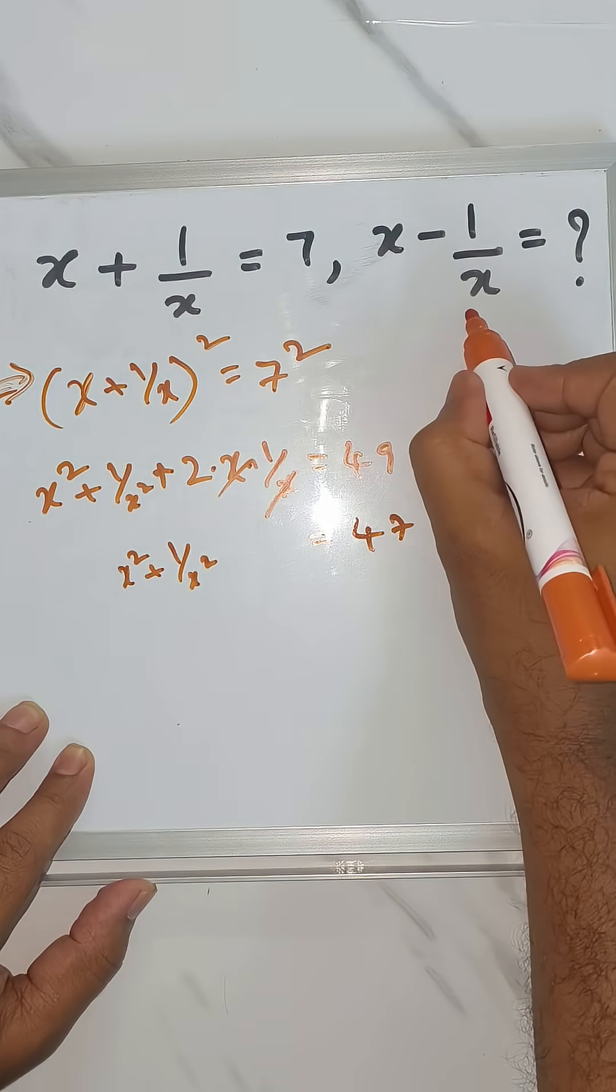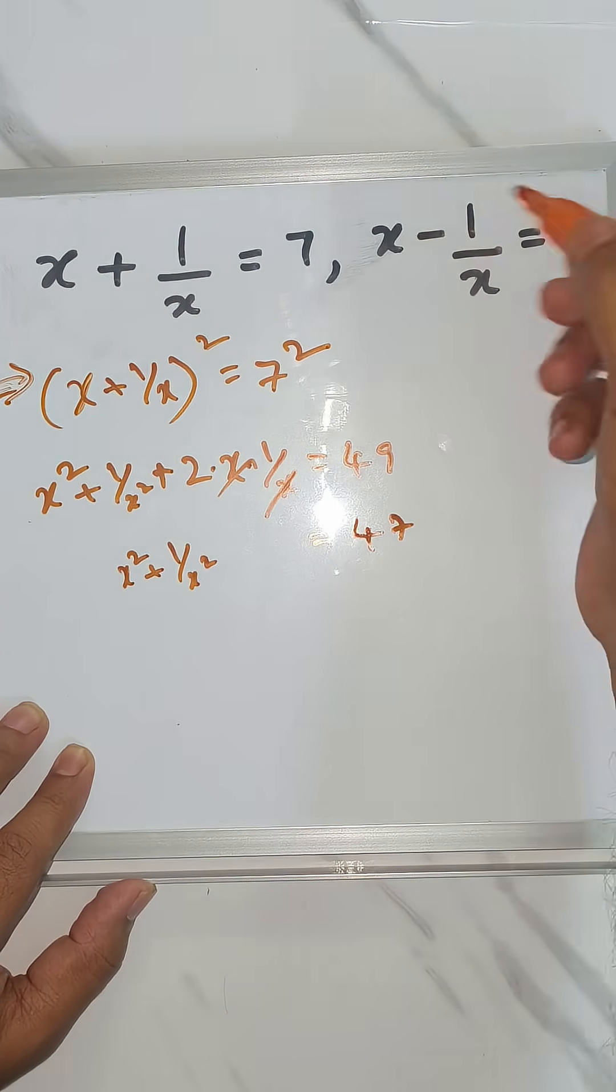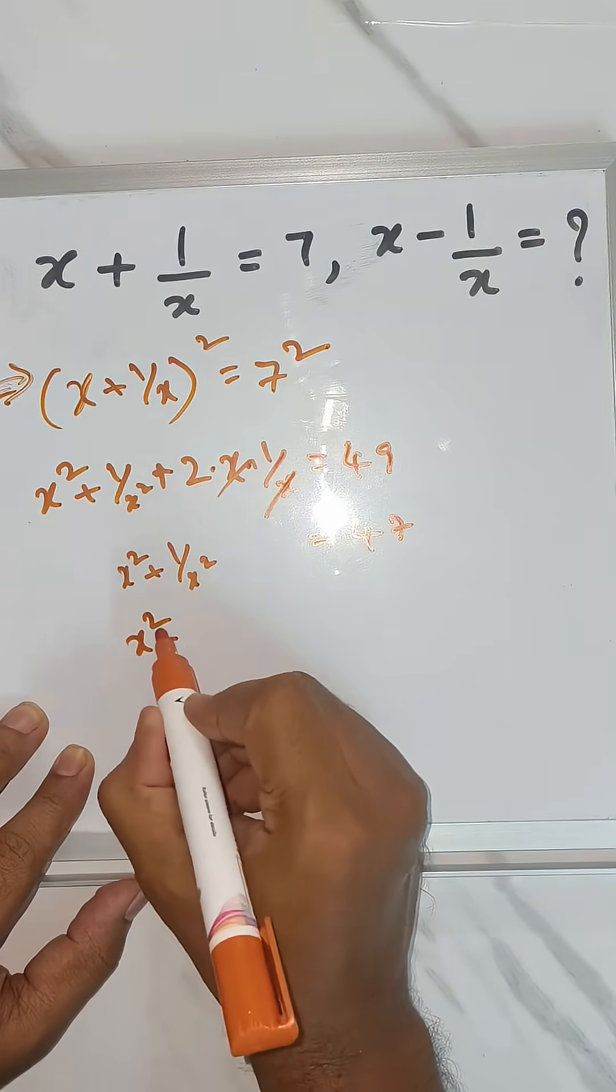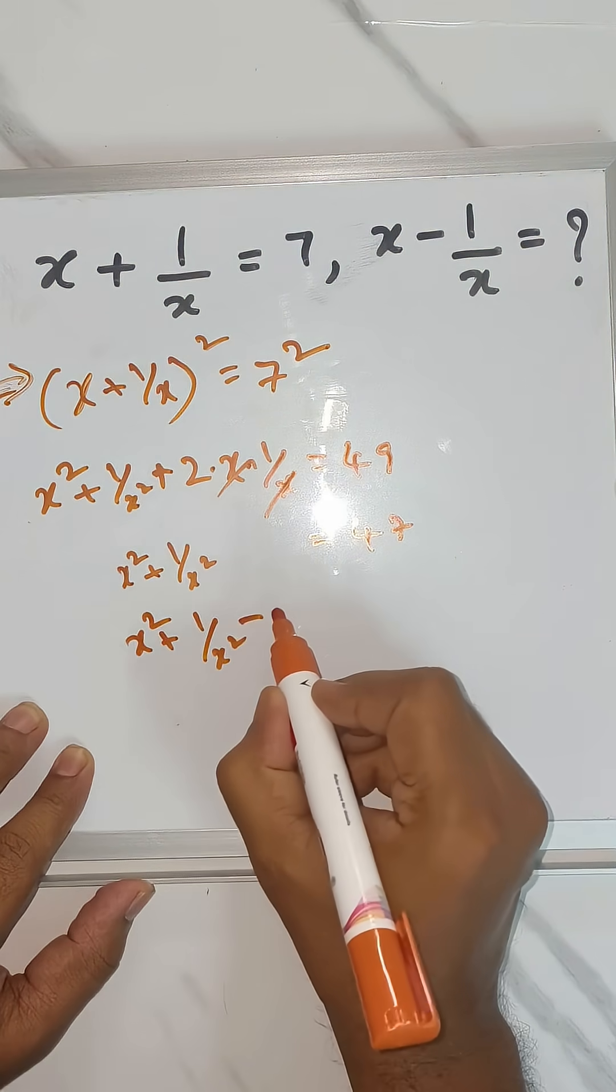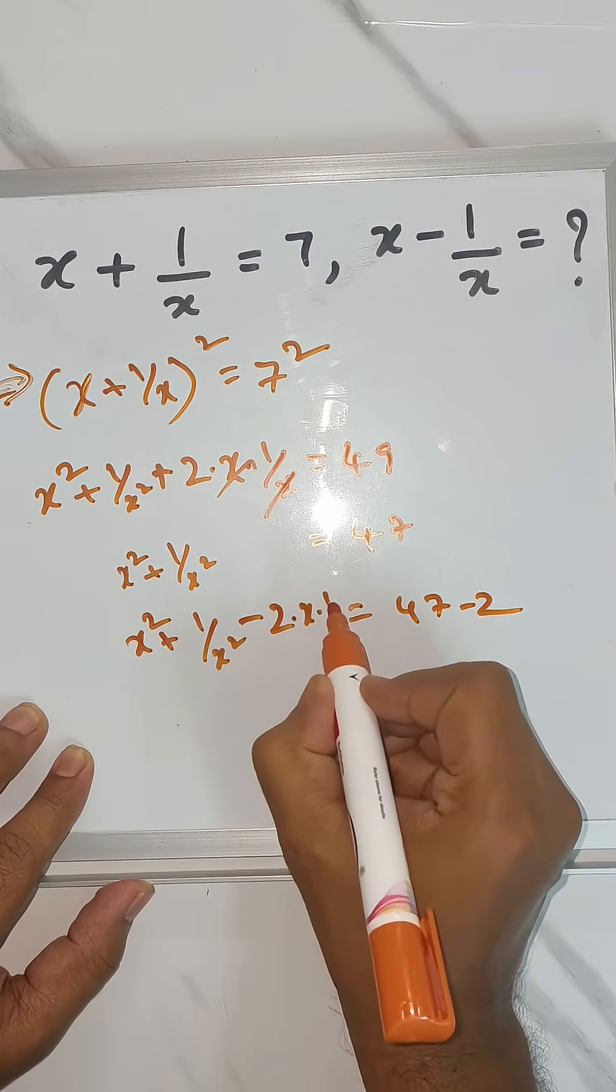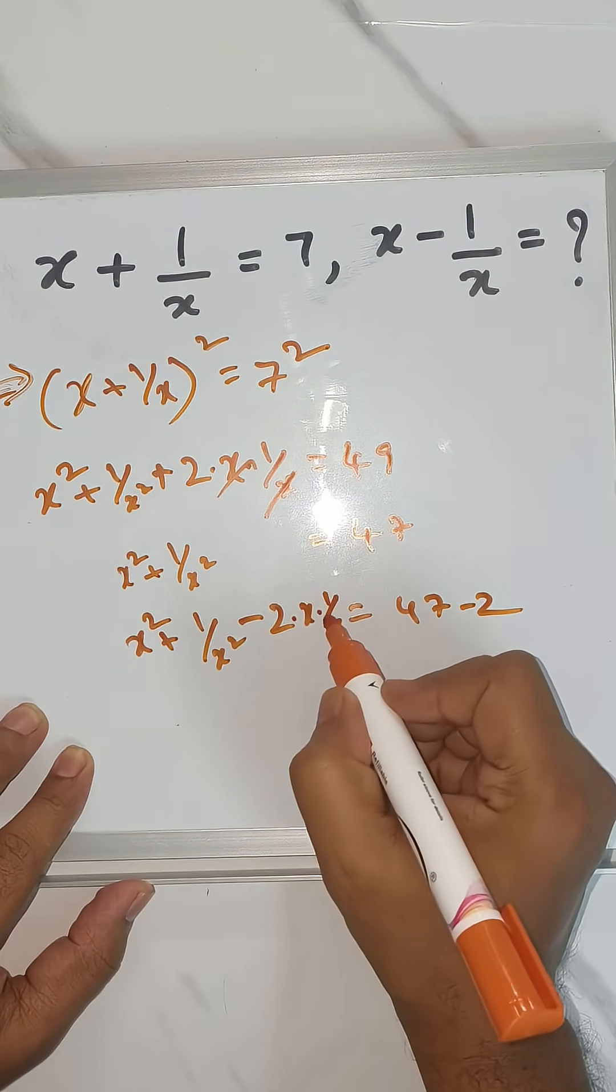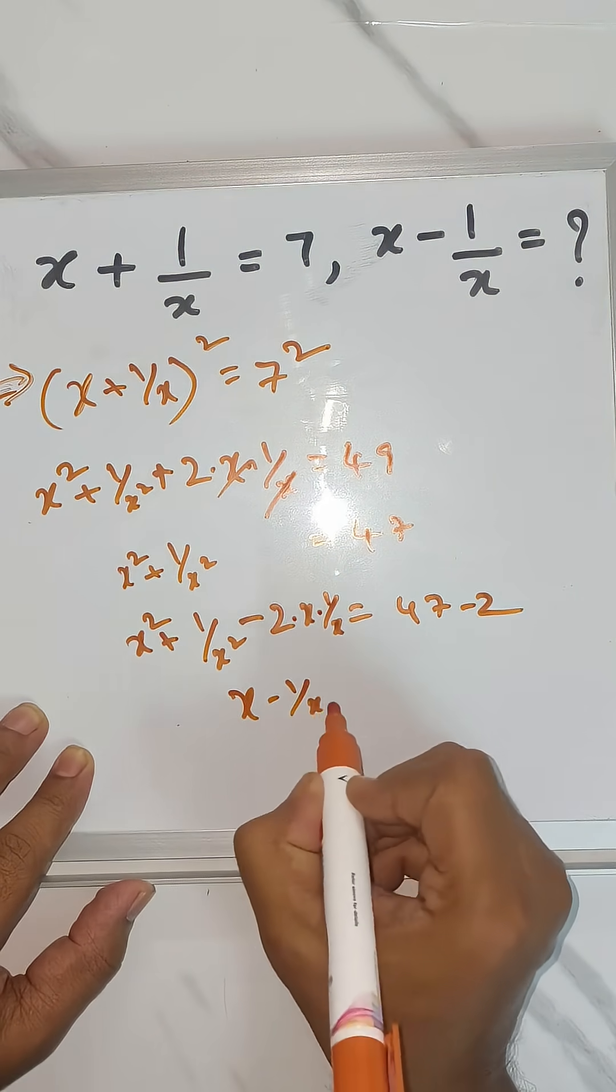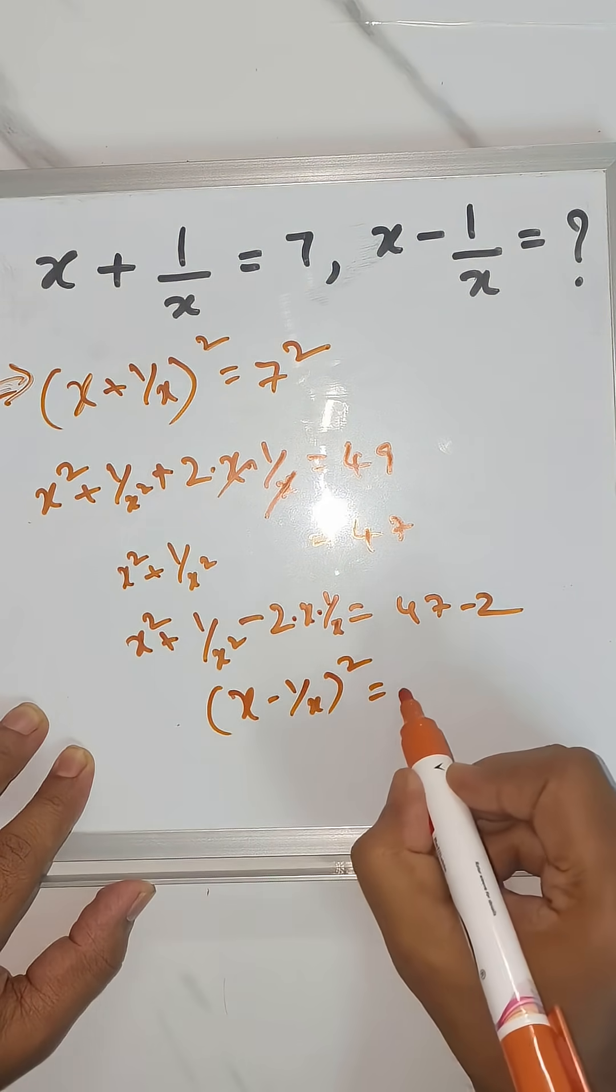Now to get x minus 1/x, we just need to make it minus square. So we just have to subtract 2 on both sides, 47 minus 2, and here x and 1/x will get cancelled out. So this will become x minus 1/x whole square, which is 45.